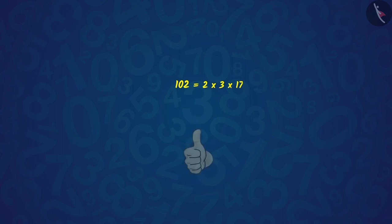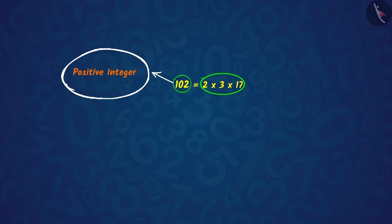Well done! Now, if we observe it carefully, then we will notice that we can multiply prime numbers to get a natural number. Let us understand this in detail.